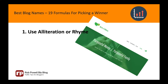Formula 1: Use alliteration. Alliteration is the repetition of the same sound or letter at the beginning of each word. It's often used in newspaper headlines — for example, 'Romney in a Rout' or 'Busted Bieber.' Alliteration is fun and grabs our attention. Here are some examples of blog names that use alliteration.